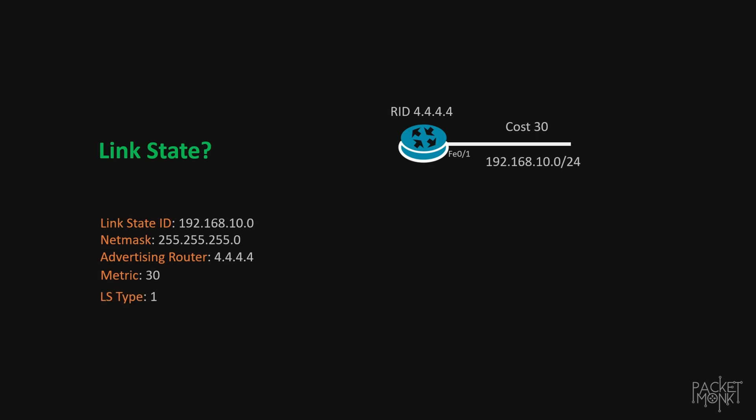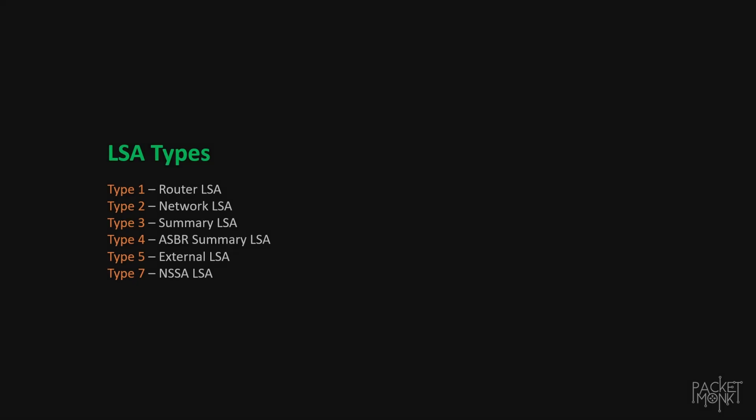Next is LSType, which stands for link-state type. Here LSType says 1, which means it is a type 1 LSA. There are different types of LSAs depending upon the functionality. This classification is based on things like which router generates the LSA, where the LSA is getting propagated, and what are the contents inside these LSAs. Since LSAs are the building blocks of OSPF, we need to understand them in detail.